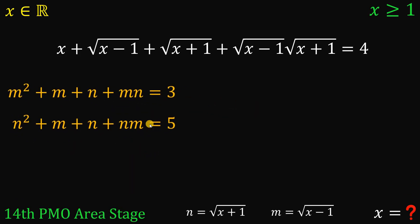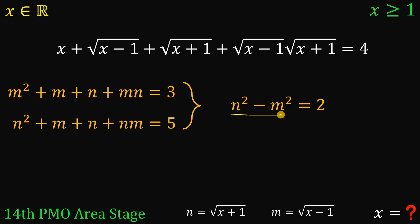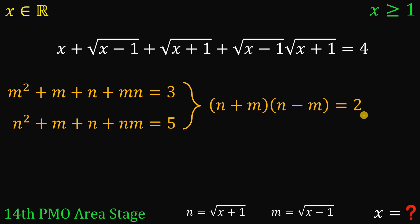Now we have two equations: n squared plus m plus n plus nm equals 5, and m squared plus m plus n plus mn equals 3. Notice both share the same expressions m, n, and mn. Subtracting the second from the first eliminates those common terms, giving n squared minus m squared equals 5 minus 3, which equals 2. Factoring as a difference of squares: n plus m times n minus m equals 2.